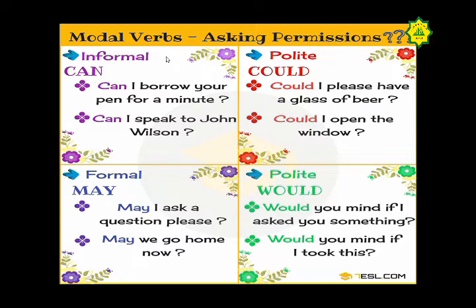Jadi kalau informal ini, kamu bisa ngomong sesama teman sebaya atau orang yang lebih muda. Selanjutnya, kita pindah ke polite — bentuk kata yang sopan. Kata 'can' bisa kamu ganti menjadi 'could'. Artinya tetap sama. Contoh: 'Could I open the window?' — bisakah saya membuka jendelanya. Bentuk sopan biasanya digunakan dengan orang tua atau yang lebih dewasa.